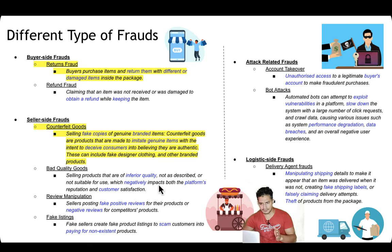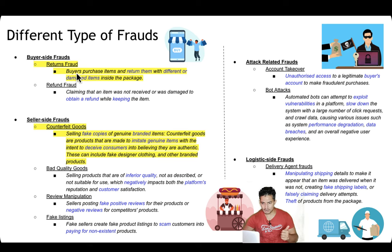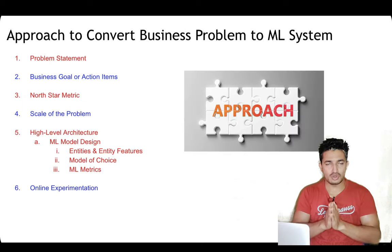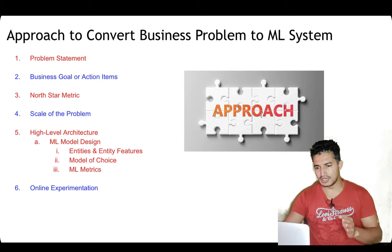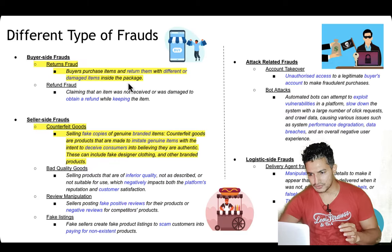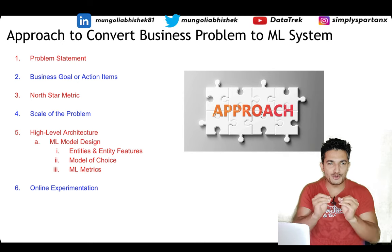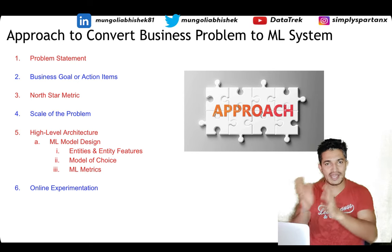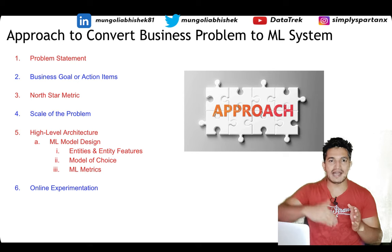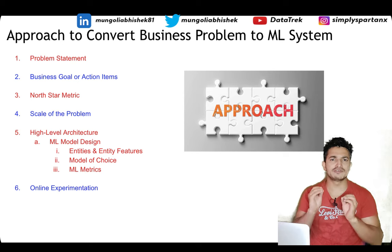After discussion, the final consensus is to prioritize return fraud and counterfeit goods first and develop ML system solutions around those. In this video we will do the system design for return fraud, and in the next video we will cover counterfeit goods. Next comes the important approach: how to convert a business problem into an ML system design.